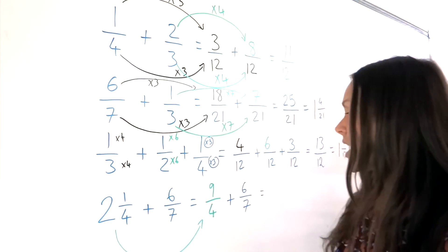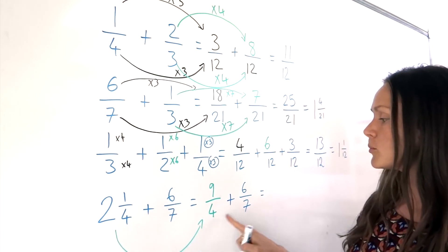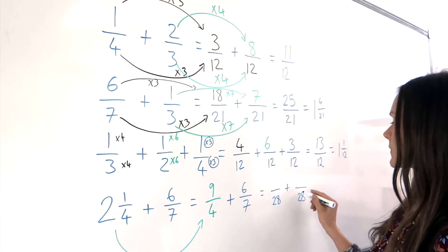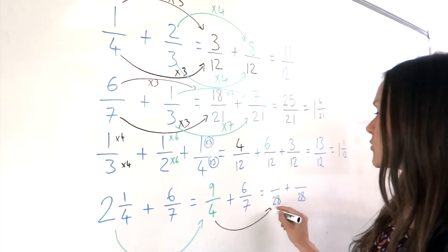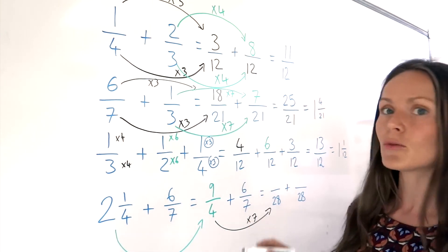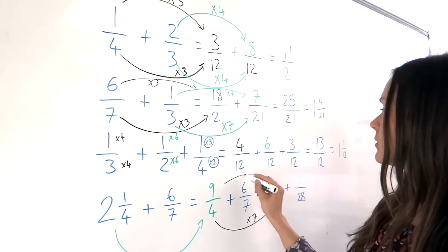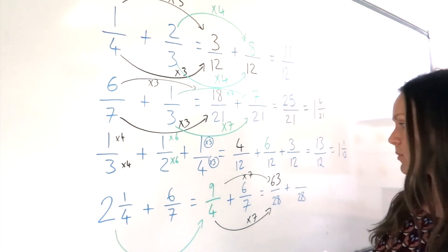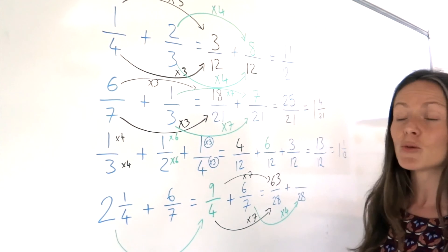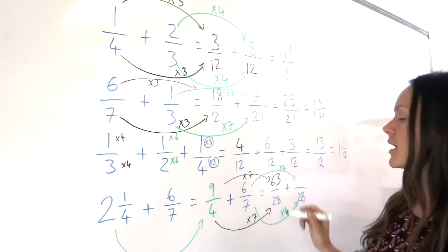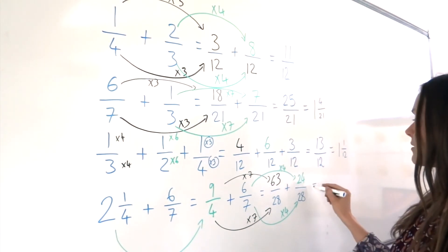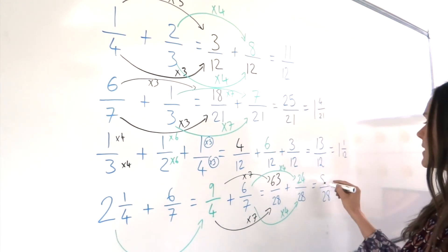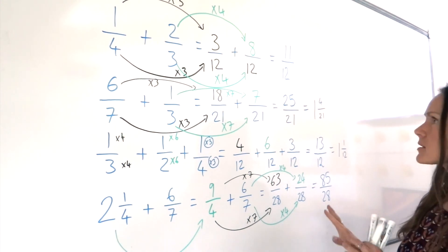I'm going to find the common denominator. The lowest common multiple of 4 and 7 — the smallest number that fits both 4 and 7 — is 28. Now I'm going to find the equivalent fractions. To get from 4 to 28, I multiply by 7. So I also multiply the numerator 9 by 7 as well. So 9 multiplied by 7 is 63. Now for the second fraction — to get from 7 to 28, I must multiply by 4. So I do the same with the numerator. 6 multiplied by 4 is 24. Now I can add the fractions together. The denominator stays the same, and when I add the numerators together, 63 plus 24 gives me 85. I can't simplify that fraction, so that one's done.